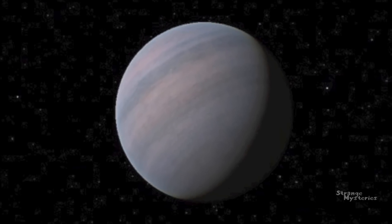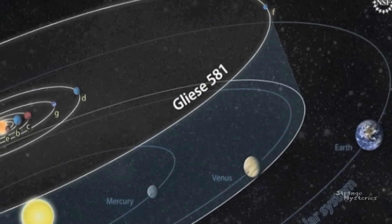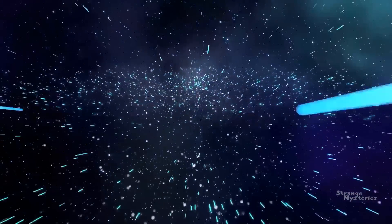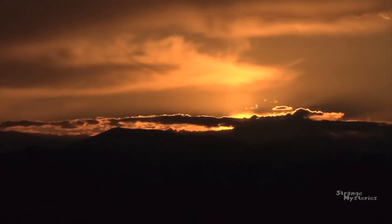The Gliese 581 star is located about 20 light years away in the constellation Libra. Of the billions of stars in the sky, Gliese 581 is only the 89th star away from our own sun in terms of distance.